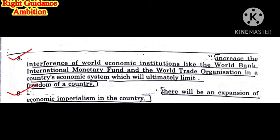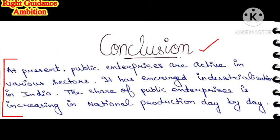The last disadvantage is there will be an expansion of economic imperialism in the country. Developed, rich countries will invest in underdeveloped countries to exploit their resources, creating puppet governments where major decisions are taken by rich foreign countries. This is called economic imperialism. At the end, write a conclusion of four to five lines — it is very important. Pick any important lines from the answer you have discussed throughout the question and write them in the conclusion.